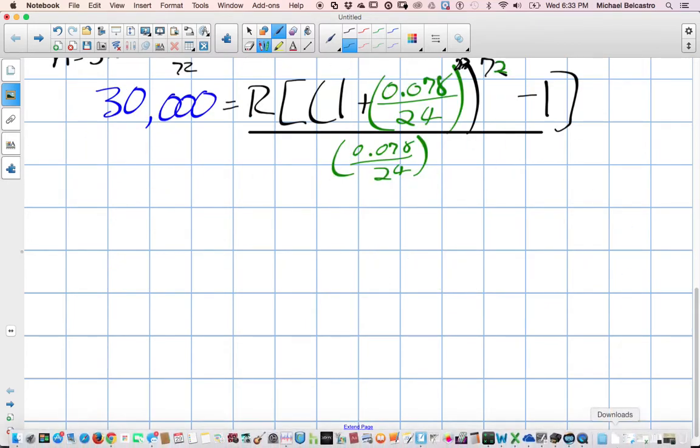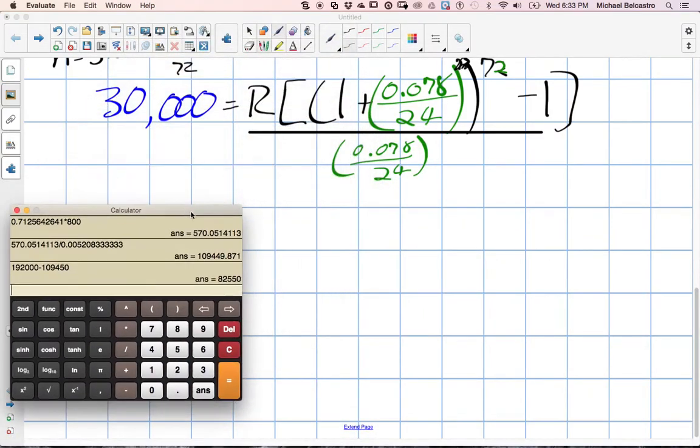So again, if we have a calculator that remembers stuff, we can do this step by step. Let's work with the inside brackets first. We have 0.078 divide 24. It's going to be equal. We're going to take that value and add one to it. So now that's the inside bracket. We're going to take that and put it to the power of 72. That gives us our new number. We take this new number and now we're going to subtract it by one. And this is what's going to give us what's on top.